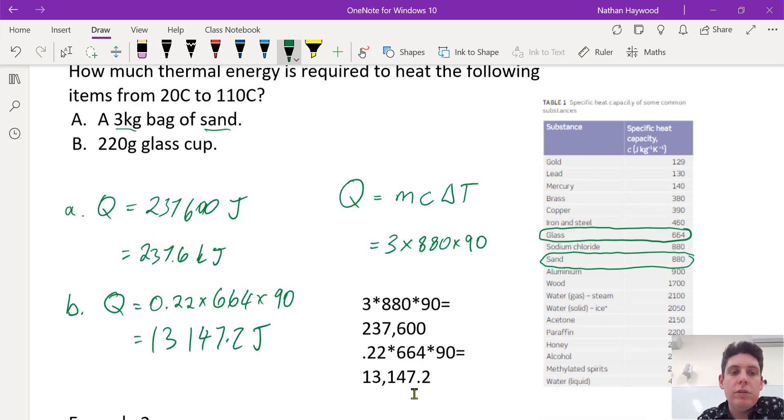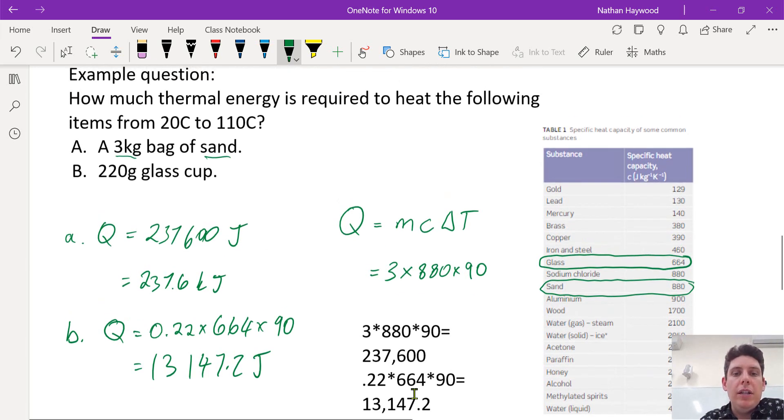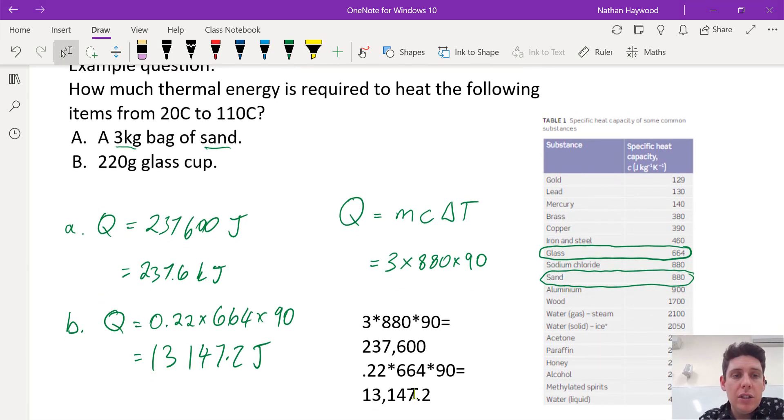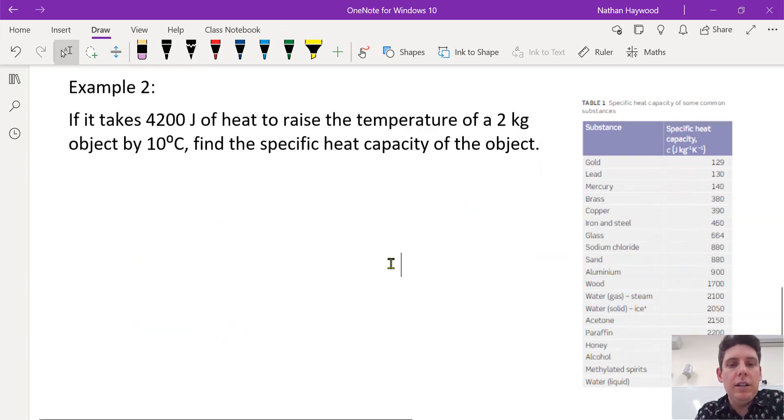664 for glass. And it's the same change in temperature. 47.2 joules of thermal energy to change the glass from 20 degrees to 110 degrees. All right, let's have a look at another example. If it takes 4200 joules of heat to raise the temperature of two kilograms by 10 degrees, find the specific heat capacity of the object.